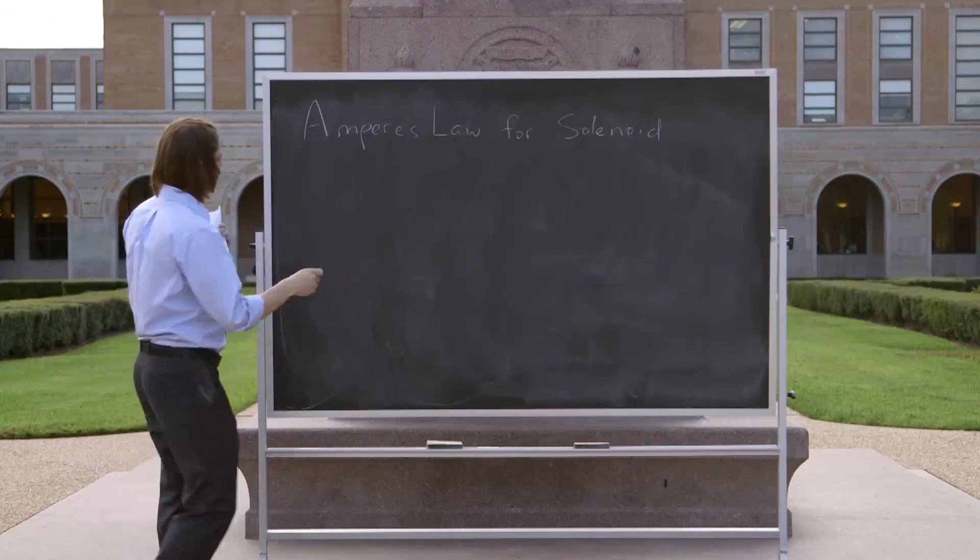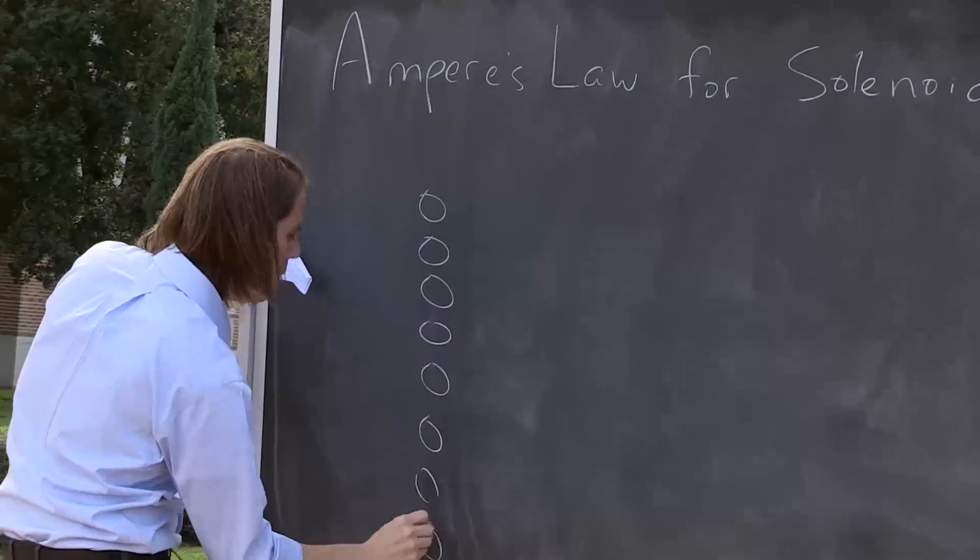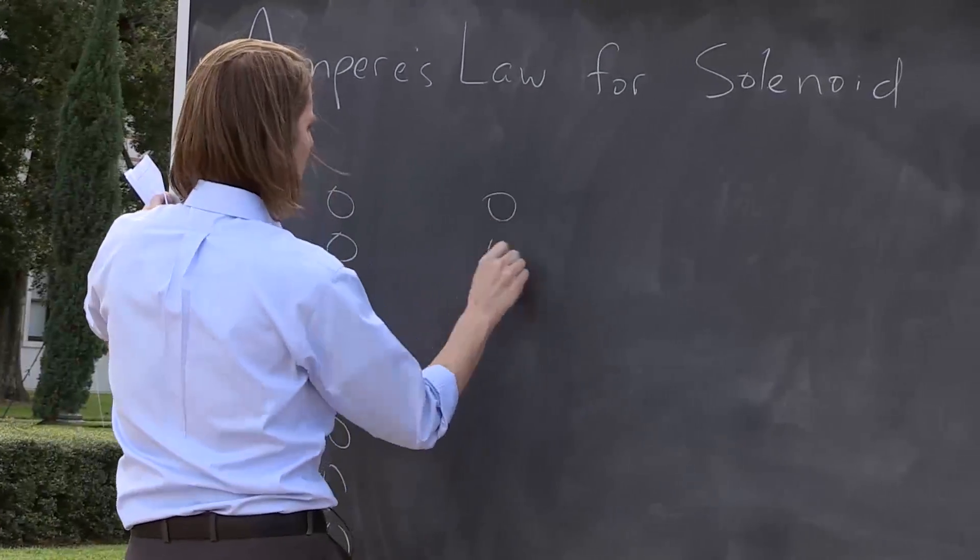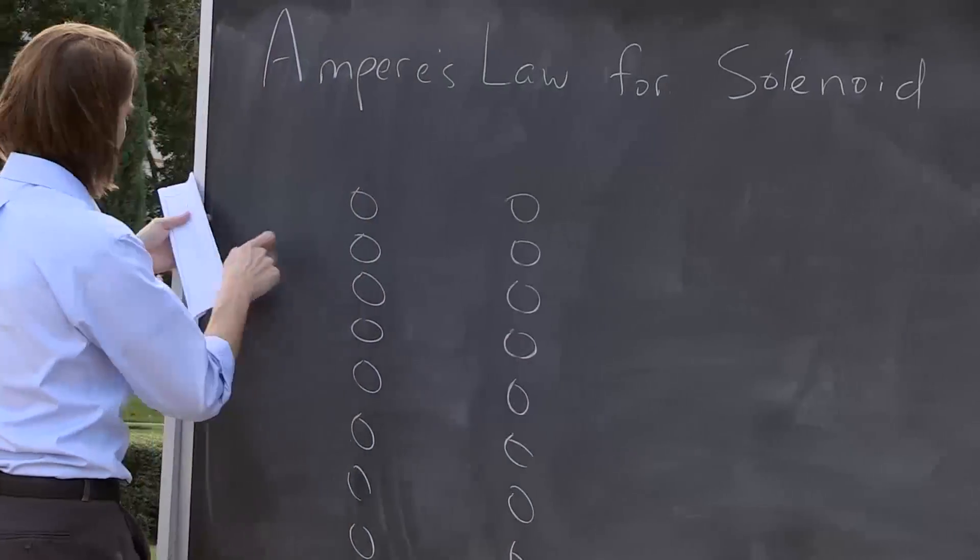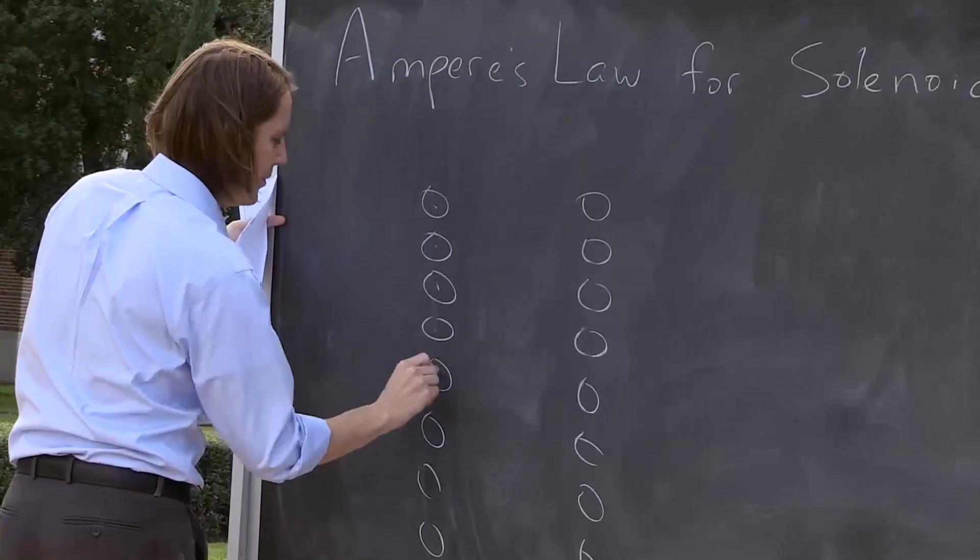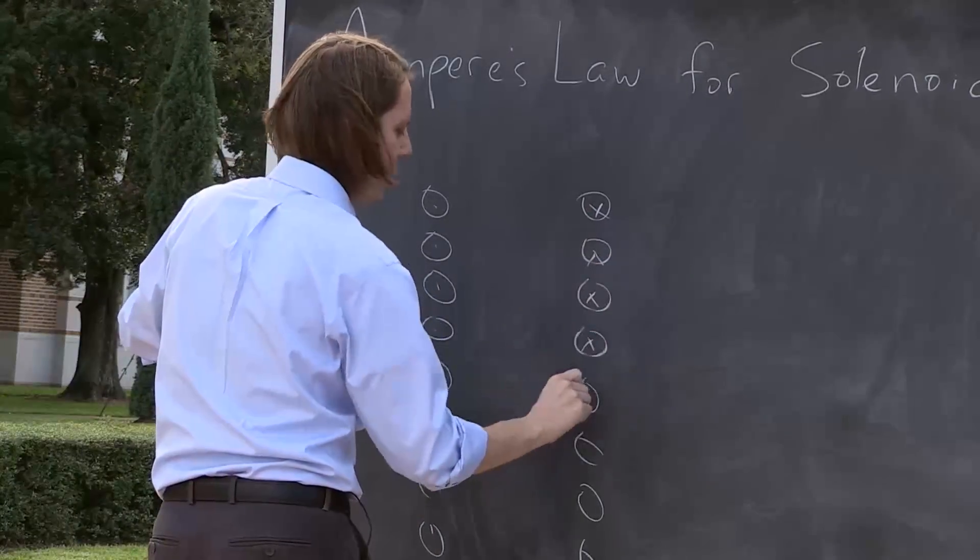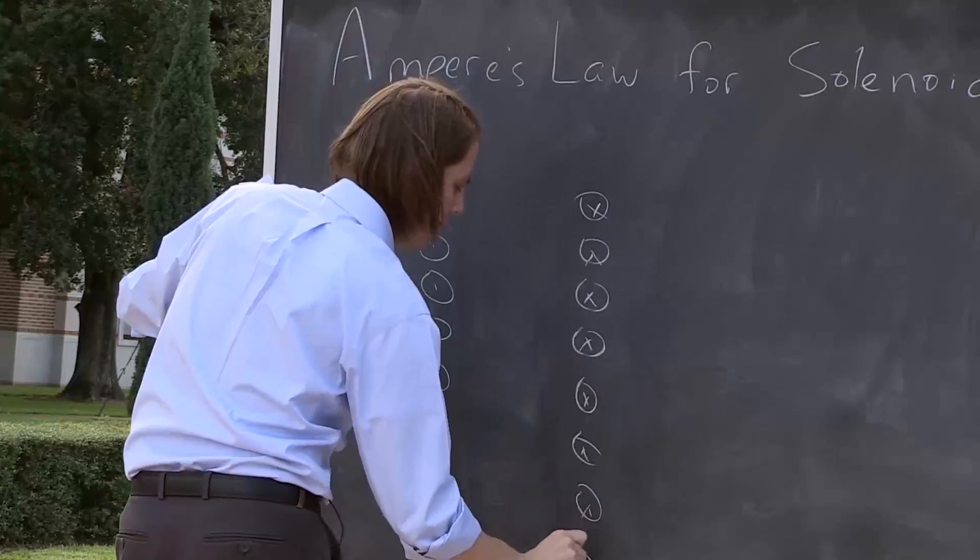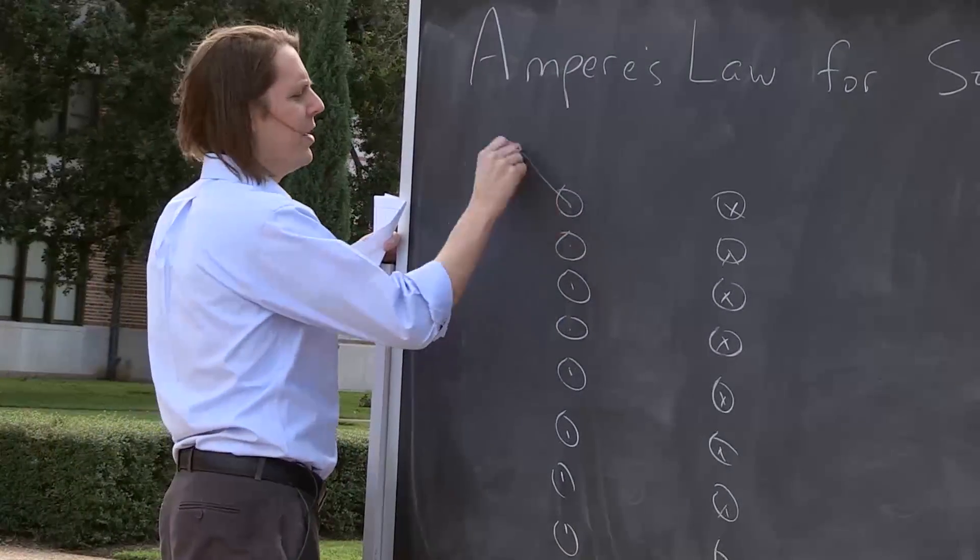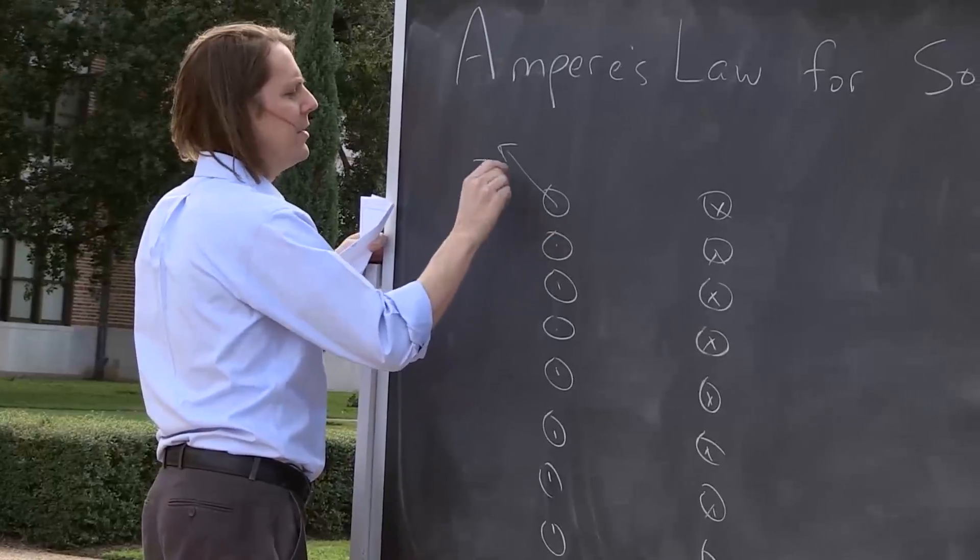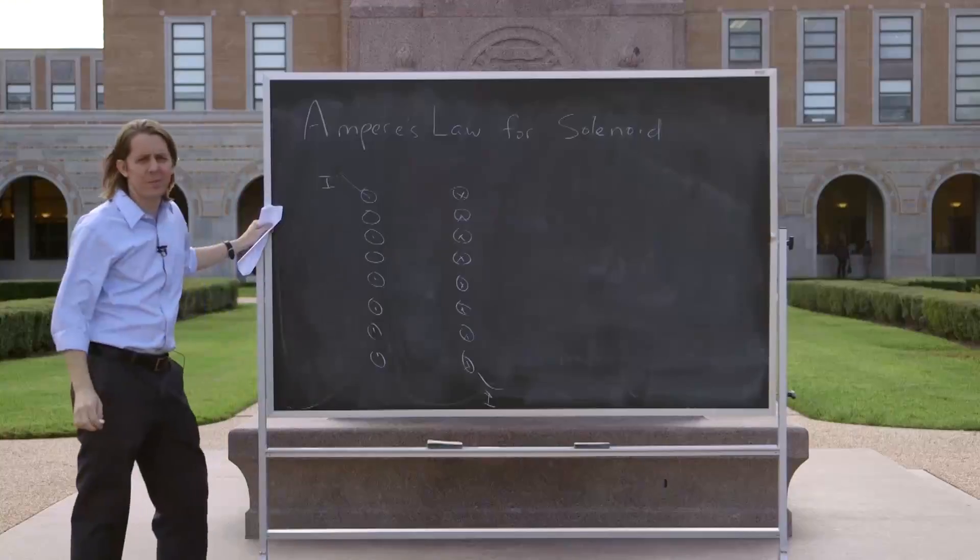Now this solenoid, we need to give it some properties, so let me just draw it first. First we have our loops, eight of them, and we can have it come out on this side and in on this side. And let's say it's carrying a current I, current I is coming in and going out, steady current in the solenoid.